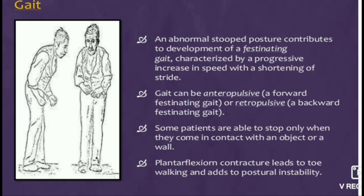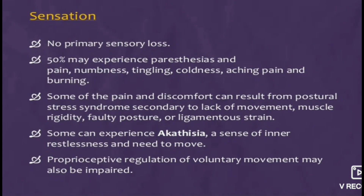An abnormal stooped posture contributes to development of a festinating gait, characterized by a progressive increase in speed with a shortening of stride. Gait can be anteropulsive (forward festinating gait) or retropulsive (backward festinating gait). Some patients are able to stop only when they come in contact with an object or a wall. Plantar flexion contracture leads to toe walking and adds to postural instability.